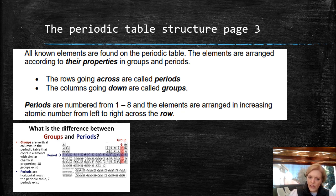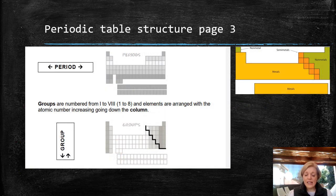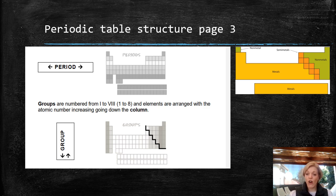Periods are horizontal rows, and there are seven that exist. We'll get into periods a little bit later in other grades, but for now you just need to know that if an element is in the same group, it means those elements are going to behave in a very similar way. I might say to you, which period is magnesium in, and you're going to have to look it up. Or I can say go up a group or down a group, depending on what the chemical properties are.